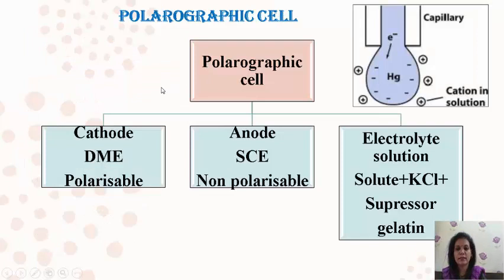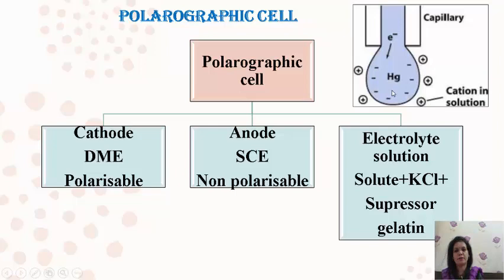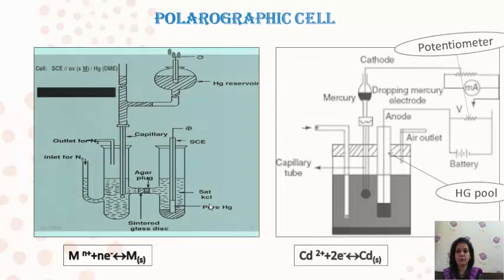The polarographic cell consists of a cathode — that is the dropping mercury electrode — which is a highly polarizable electrode, and the anode — which is a saturated calomel electrode acting as a reference electrode. The non-polarizable anode does not take part during the reaction. The electrolytic solution consists of supporting electrolyte like potassium chloride and gelatin. When the mercury drop comes in contact with the salt solution, it forms an electrical double layer and, depending upon the voltage applied, the species will get reduced. Dissolved oxygen must be removed by purging nitrogen gas.